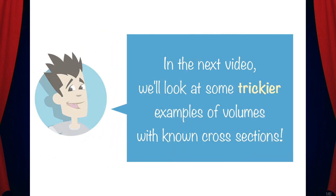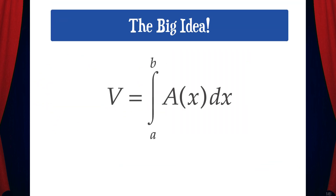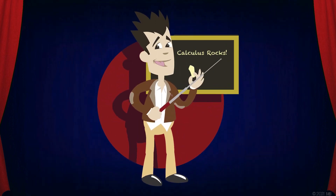In the next video we'll look at some trickier examples of volumes with known cross-sections. For now, make sure you understand the big idea: the volume is the integral from a to b of A(x) dx. And that's how you rock calculus!